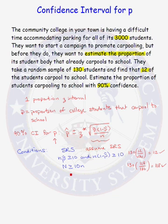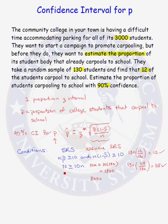Is the size of our population at least 10 times the size of our sample? 10 times N is 10 times 130, which is 1,300. The size of our population is 3,000, and that is greater than 1,300. So our third condition is met. We can now construct our 90% confidence interval for P.